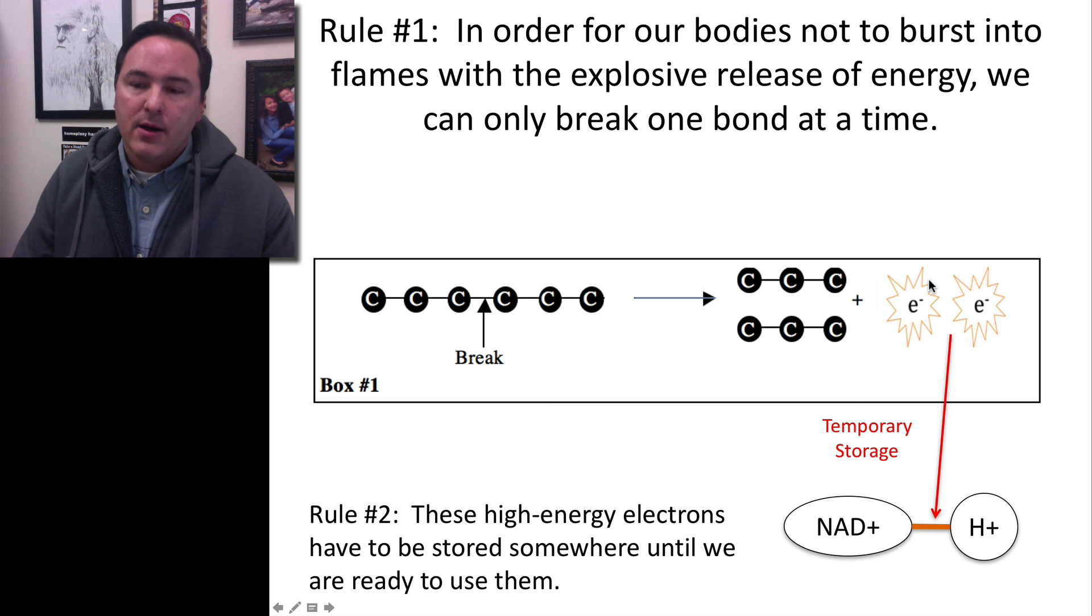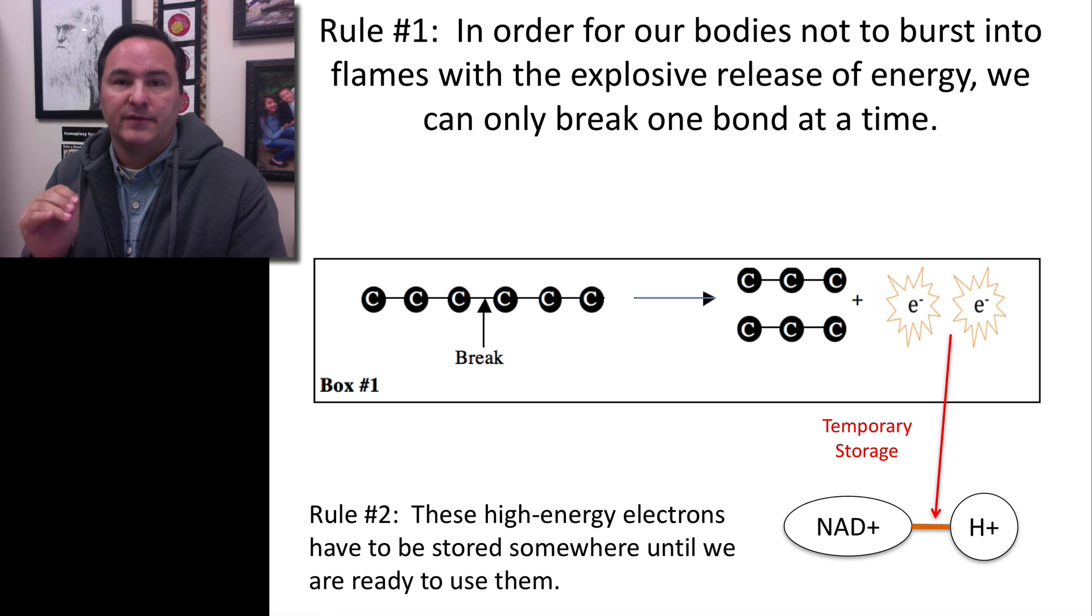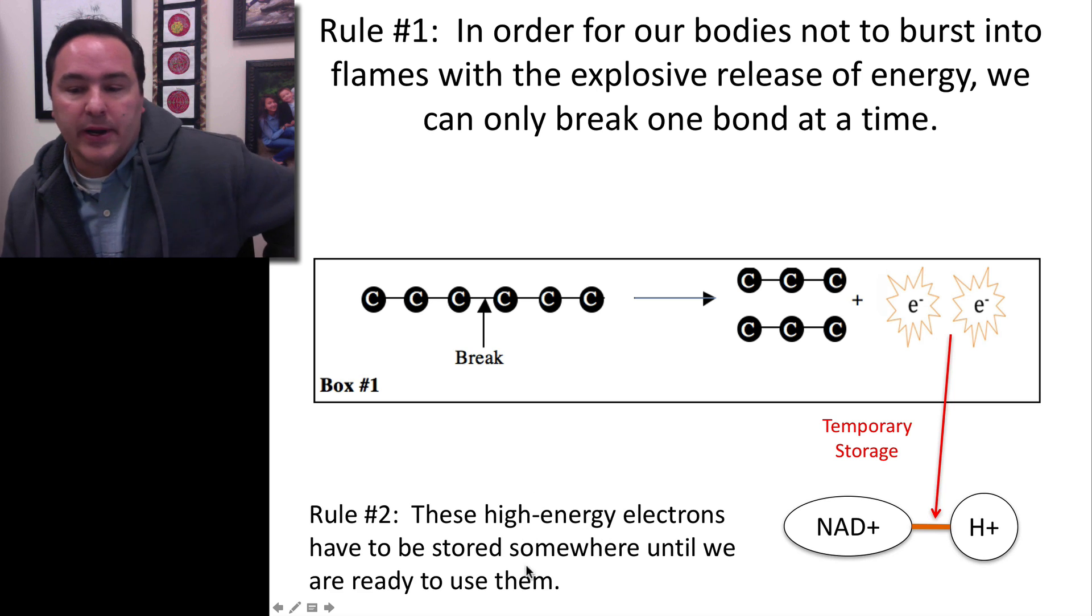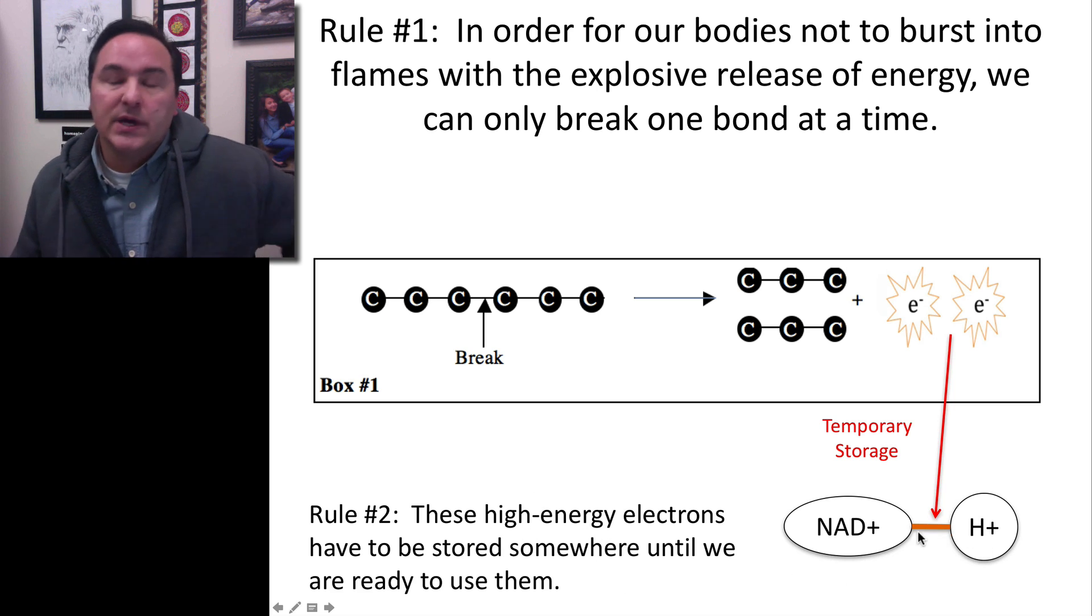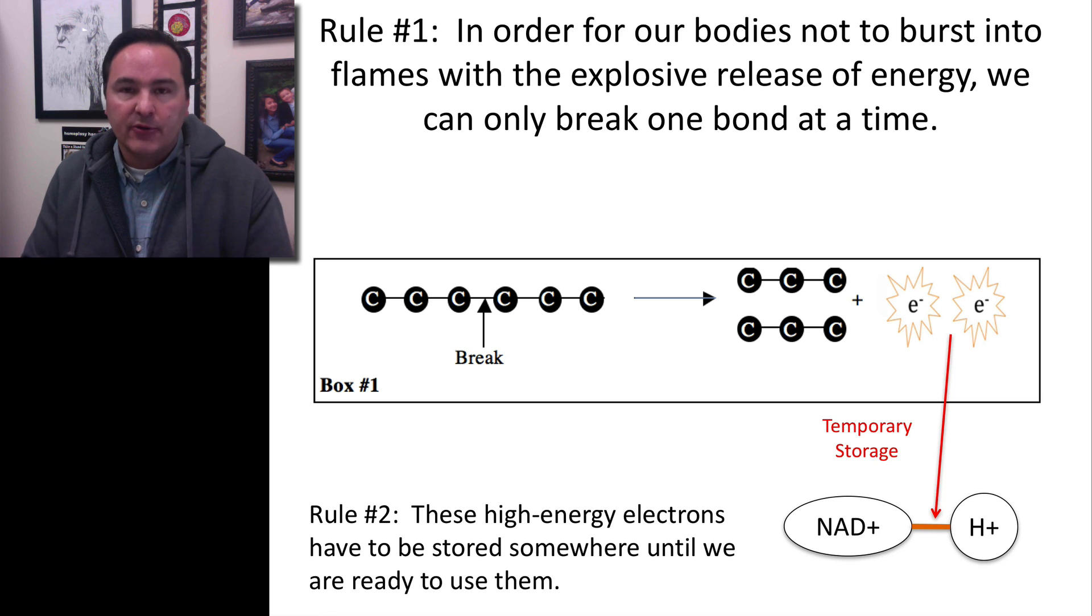Now, these electrons just can't stay floating around. They have to be stored for a little bit of time. And the way that we store these is using another molecule by putting the electrons back into a bond. So these high-energy electrons are stored somewhere else until we're ready to use them. And the molecule that we use is NADH. NADH is an electron carrier molecule. It can take on those electrons and store them until they're ready to be used.